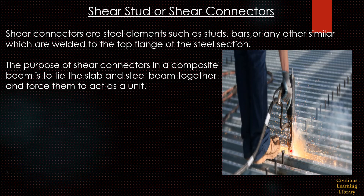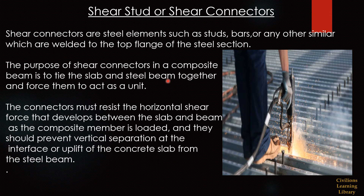The main purpose of shear connectors in a composite beam is to tie the slab and steel beam together and force them to act as a unit. The connector must transfer the horizontal shear force that develops between the slab and beam in the composite member when loaded, and it should also prevent vertical separation at the interface or uplift of the concrete slab from the steel beam.